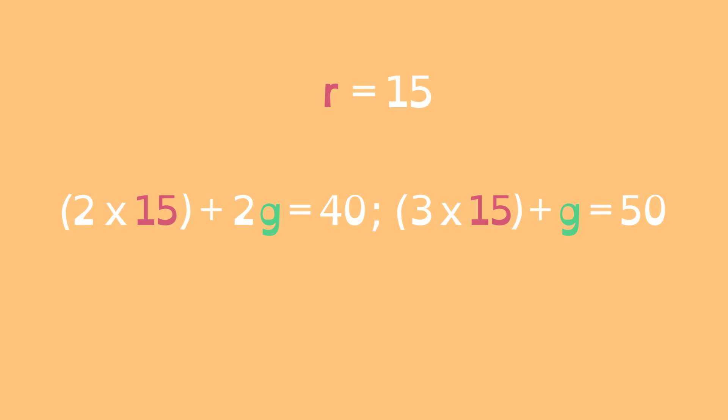Now that we know the value of one variable, we can solve for the other variable. When we solve the equation for g, we can see the result is 5.